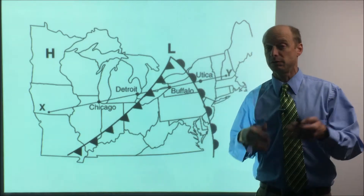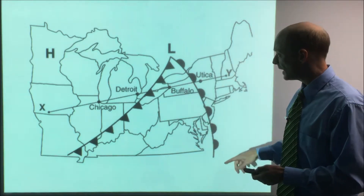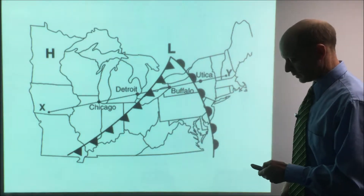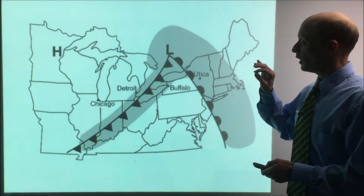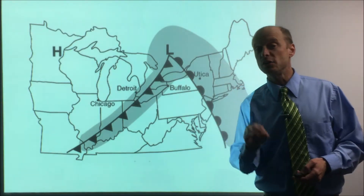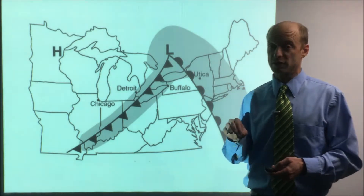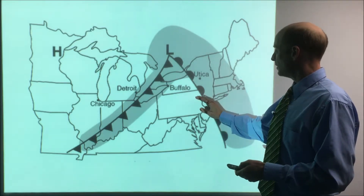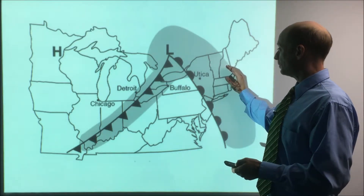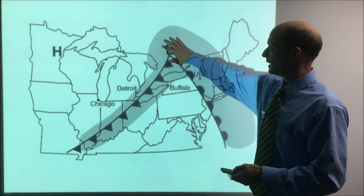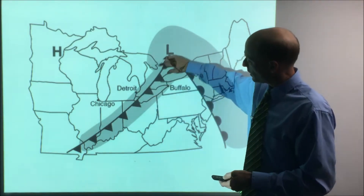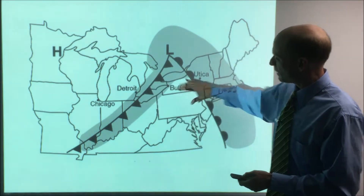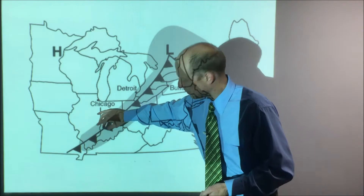Now we're seeing this on a map. We have a low pressure — these fronts always come out of low pressures. This is a warm front and this is a cold front. In a warm front, you get a wider area of clouds out in front of it. Low pressure usually has clouds around it. A cold front has a narrower area of clouds right on it.